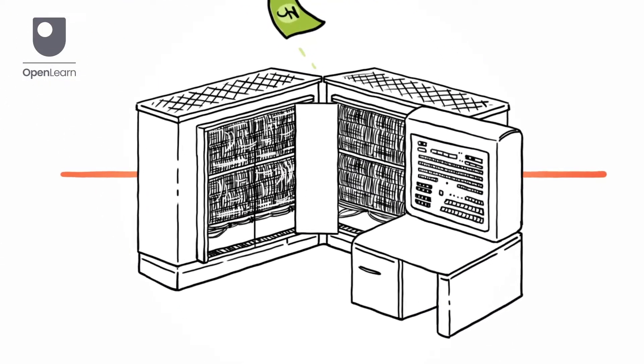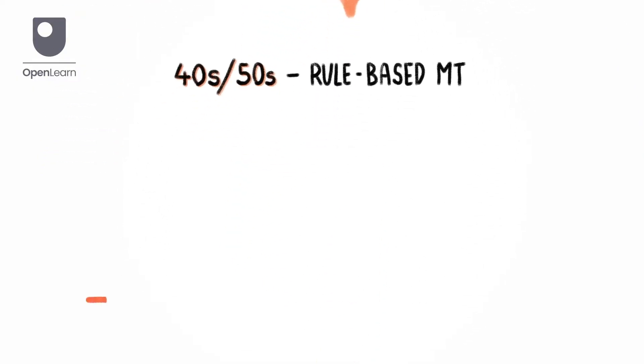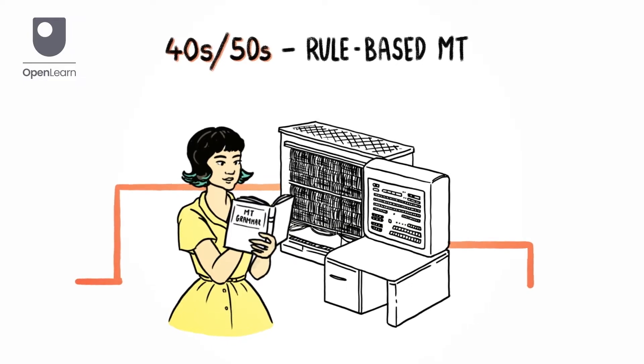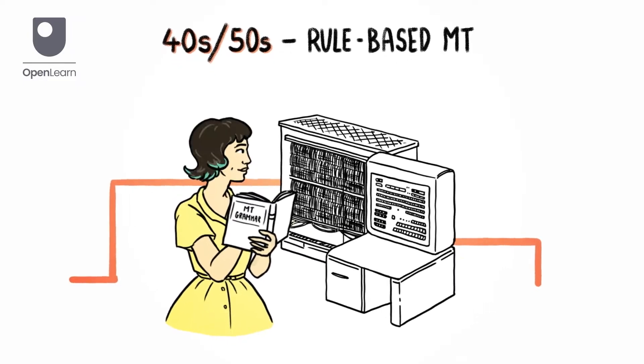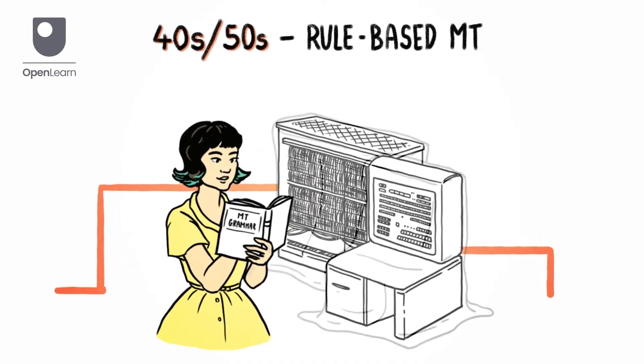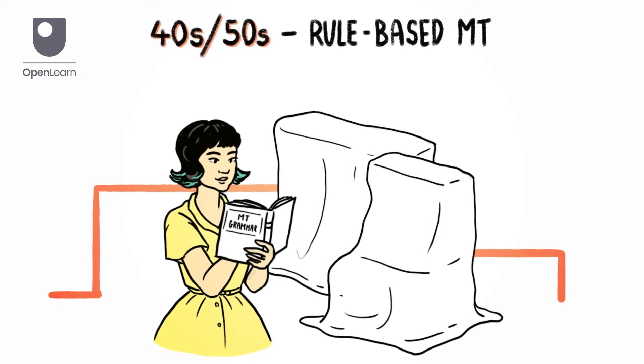Within a decade, the first machine was built. Initially, machine translation was rule-based, relying on grammar rules and dictionaries. However, computers struggled with understanding grammar and meaning. Results were disappointing and so the project was abandoned in 1966.